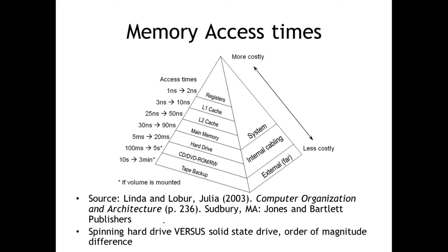Memory access times are important to understand for performance. There is an order of magnitude difference as we move through the hierarchy. An order of magnitude means changing the exponent — going from 10^0 to 10^1, for example. We have registers, caches, main memory, and hard drives that progressively get slower and more expensive in terms of access time, changing by an order of magnitude between each level.